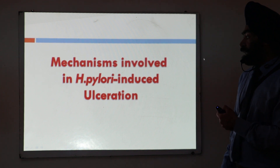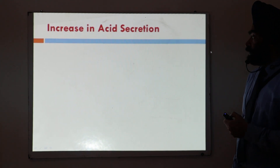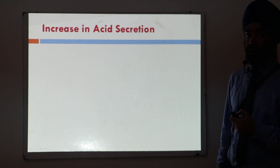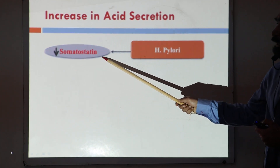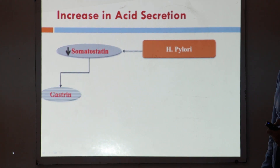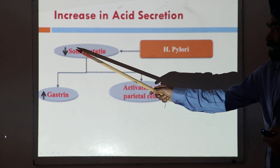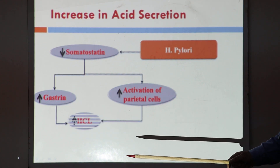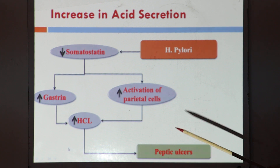I will now discuss the mechanisms involved in H. pylori induced ulcers. First mechanism: H. pylori infection causes an increase in acid secretion. H. pylori ultimately reduces the levels of somatostatin, which is a local hormone in the GIT. A decrease in somatostatin is followed by an increase in gastrin level, and the decrease in somatostatin also causes activation of parietal cells. Both of these effects ultimately cause an increase in HCL. So decreased somatostatin leads to increased HCL, which is responsible for the ulcer.